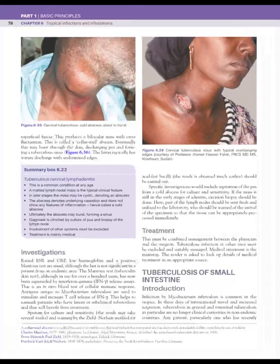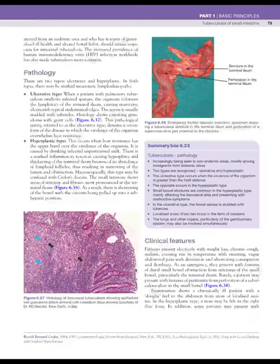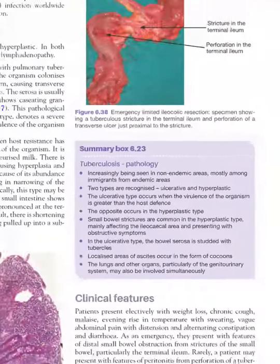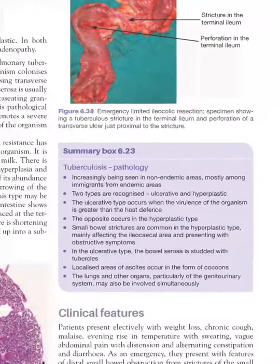Intestinal tuberculosis is mainly of two types: ulcerative and hypertrophic. The ulcerative type is due to more virulent bacteria and may lead to ulcers and perforation. The hypertrophic type is caused by drinking unpasteurized milk with Mycobacterium bovis and leads to intestinal stricture, obstruction, and localized ascites.